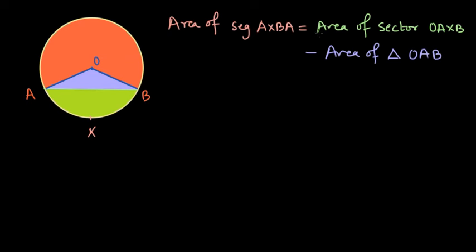Now in order to find the area of the segment AXBA, we must know some information since we need to know the area of the sector OAXB. It is expected that we will know this angle theta at the center so that we will be able to calculate the area of the sector and length of the chord L so that we can find the area of the triangle. In some cases, we might be provided with the area of the triangle OAB directly.